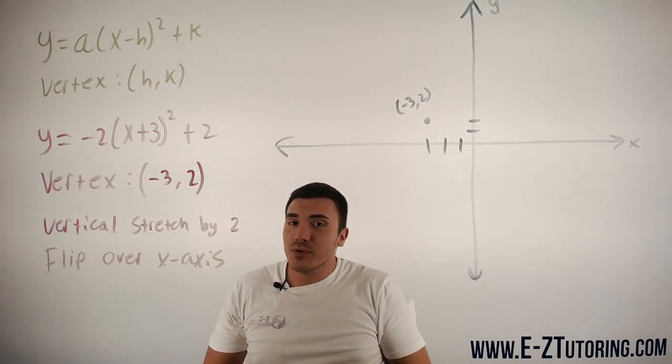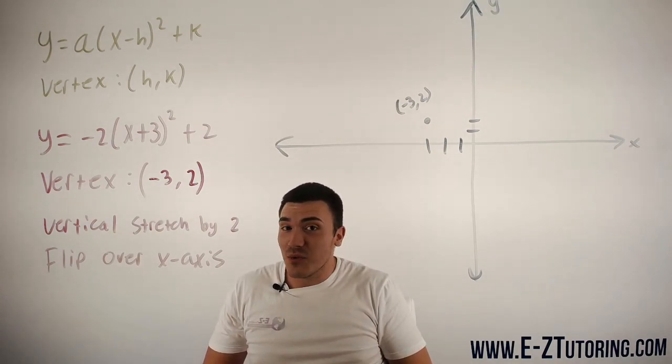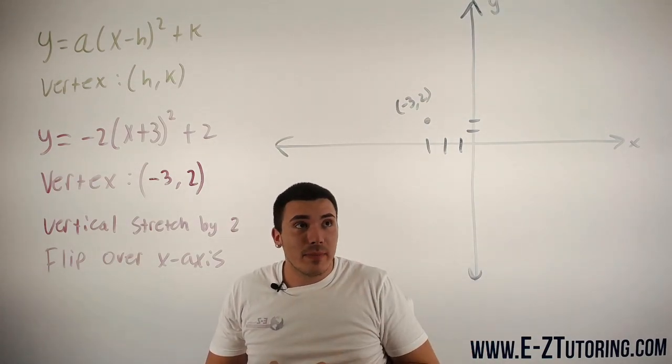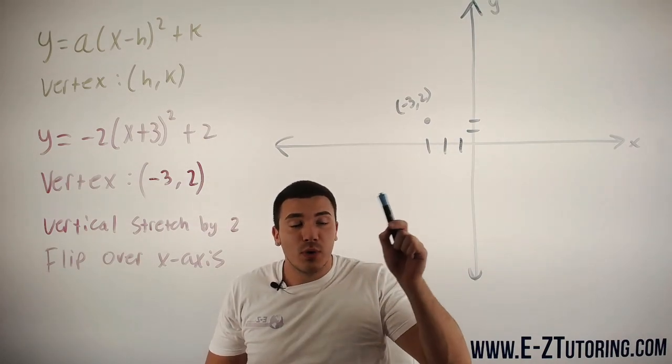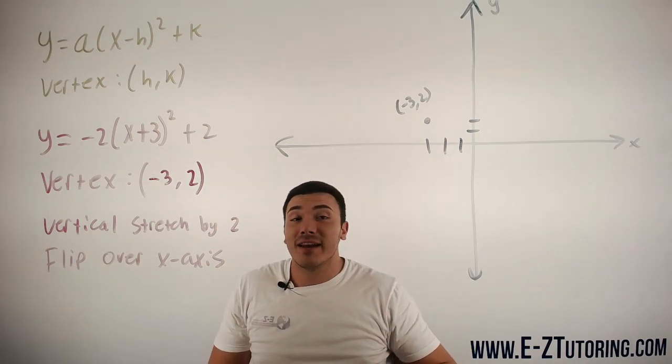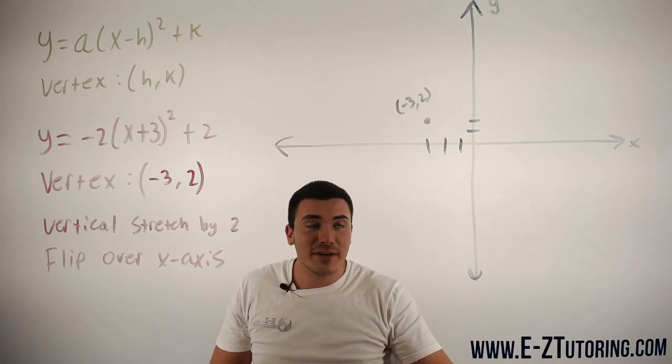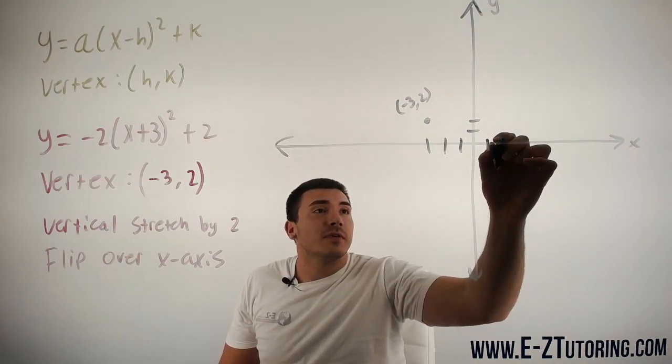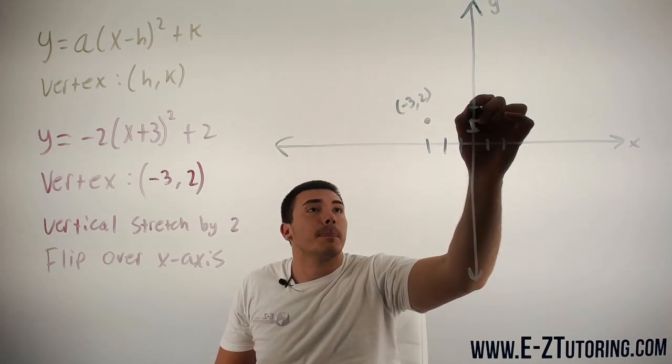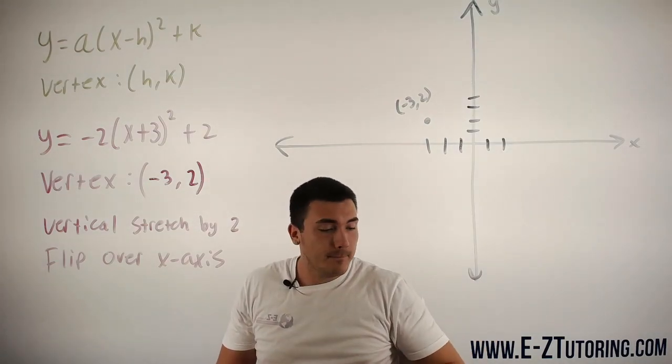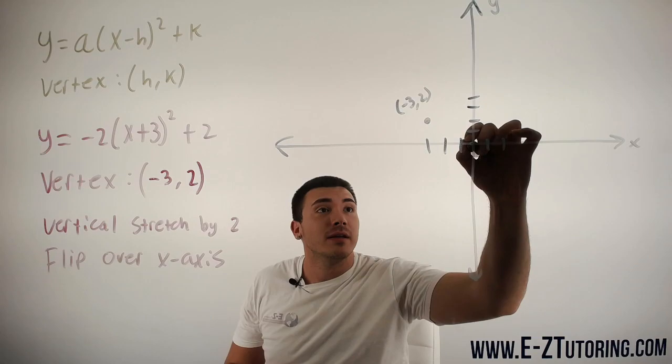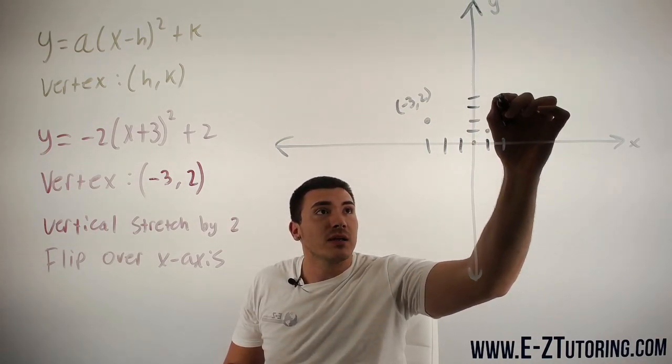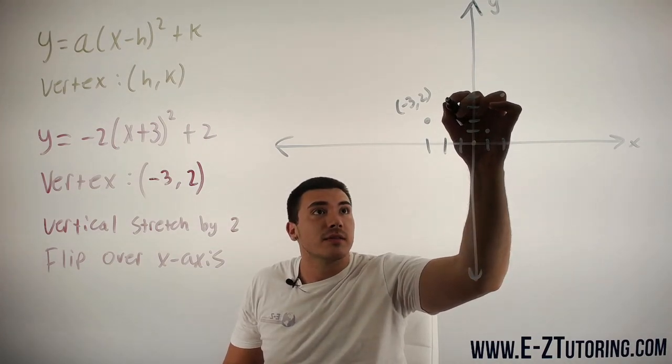Now, usually in y equals x squared, the parent function, your first point on your parabola, you go up 1 over 1. Why don't I go ahead and actually plot the original function? So for the original function y equals x squared, you go up 1 over 1, and then from here you go up 3 over 1, just like so.